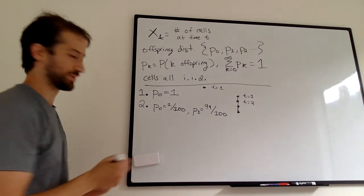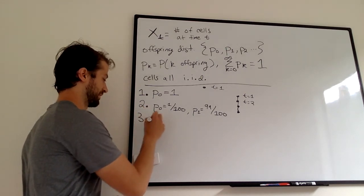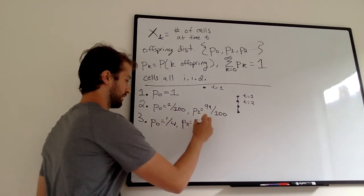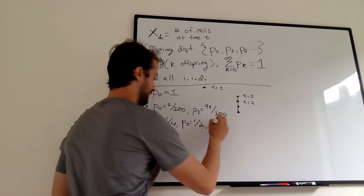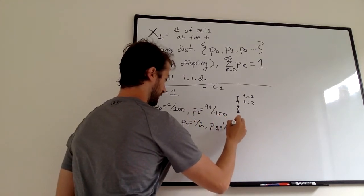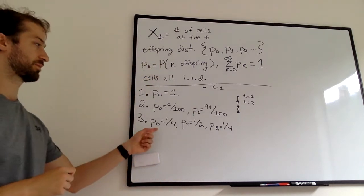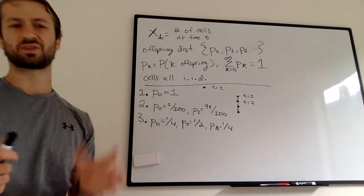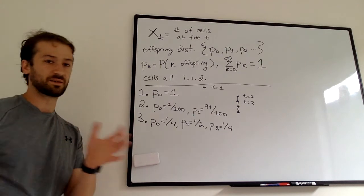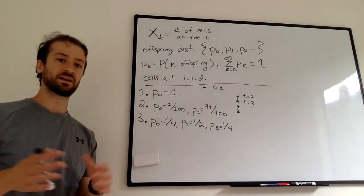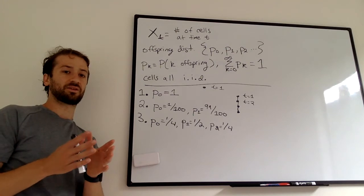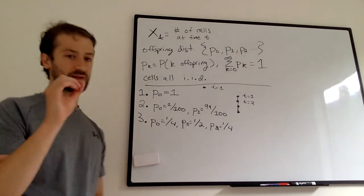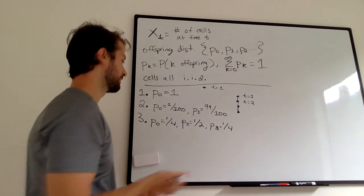The most interesting example so far, we're going to give another simple setup. P sub 0 equals 1/4, P sub 1 equals 1/2, P sub 2 equals 1/4. In this case, either you have zero kids with probability 1/4, one kid with probability 1/2, or two kids with probability 1/4. I should also clarify, I'm saying kids - these are cells that subdivide. It doesn't take two cells to make one cell. It either regenerates one cell or divides into two cells. So we're basically just considering a single cell.